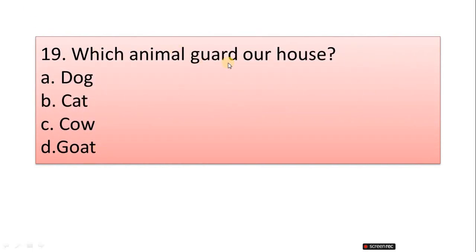Question 19: Which animal guards our house? A. Dog, B. Cat, C. Cow, D. Goat. Correct answer is option A, Dog.